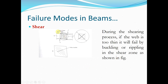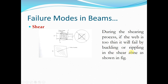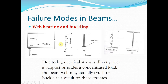The next failure mode is shear. When heavy shear acts at a particular cross-section of the beam, a small element behaves such that one diagonal is subjected to tension and the other to compression, causing the rectangular element to deform into a rhombus shape. During shearing, if the web is too thin, it will fail by buckling or rippling in the shear zone — this is called failure due to shear.